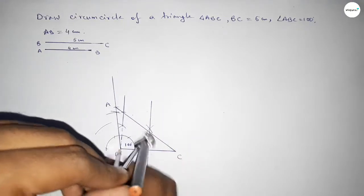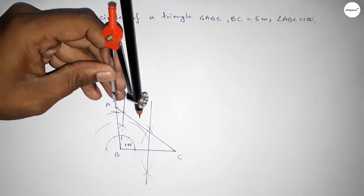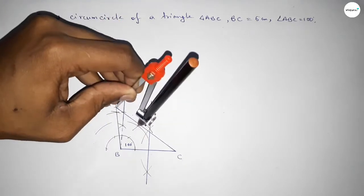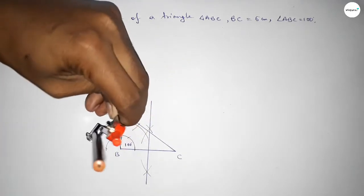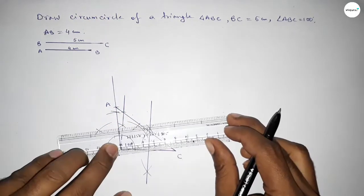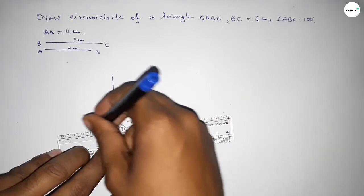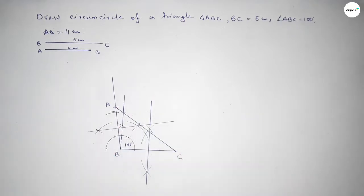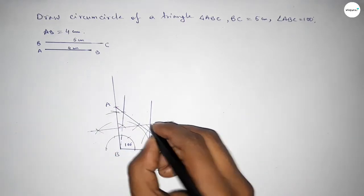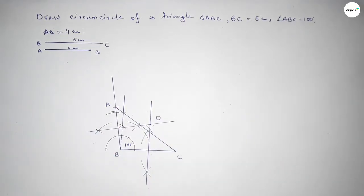Next, bisecting line AB. Taking greater than half of AB and drawing arcs on both sides with the same length, placing the compass and cutting here and cutting here. Joining this bisector — both bisectors intersect at a point, which we label as circumcenter O.